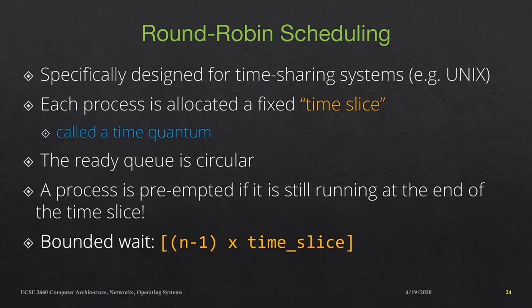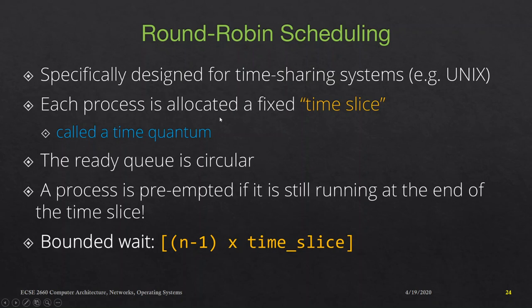Now let's look at round robin scheduling. It is closely related to first come first serve, however it is preemptive — and that preemptive nature is crucial to its execution. It is specifically designed for time sharing systems, for example Unix systems, where one CPU resource is shared by multiple processes. This round robin scheduling algorithm helps us achieve very good performance metrics.